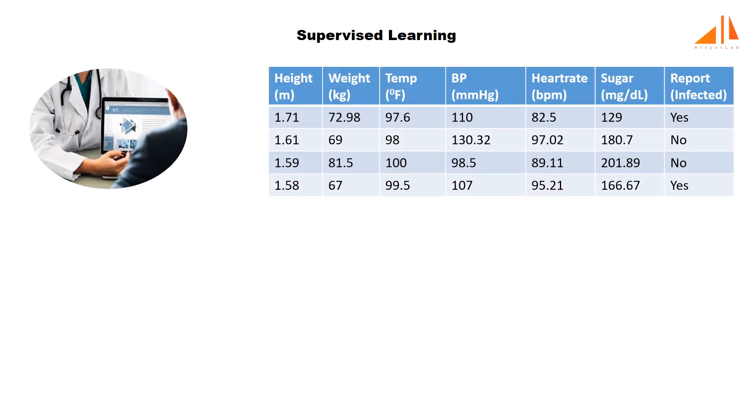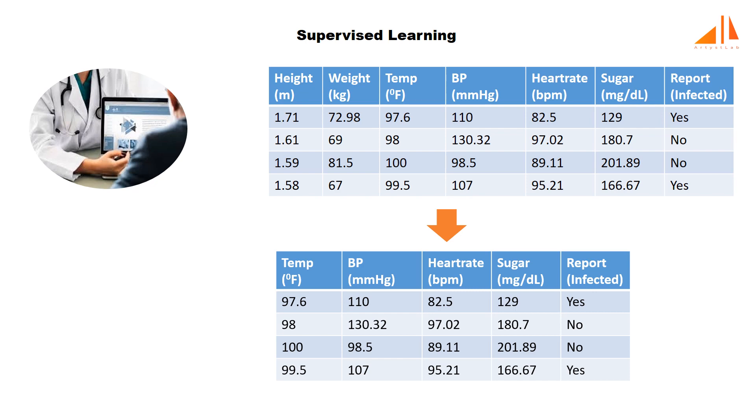Let's take another example. Say a software company is developing software for a pharmaceutical company which will predict whether a suspected patient is infected from a certain disease or not. The input data to such software will be physical details of the patient — height, weight, temperature, blood pressure index, heartbeat rate, sugar level, etc. Based on previous reports and observations, the developers will decide which symptoms really affect the particular disease. Let's say those are temperature, blood pressure, heart rate, and sugar level. This is called data analysis.